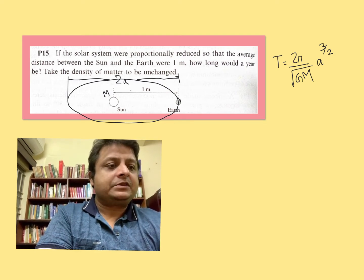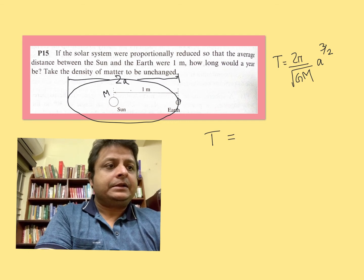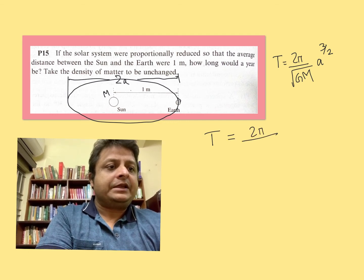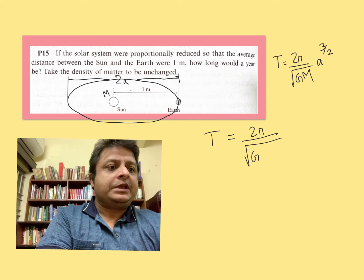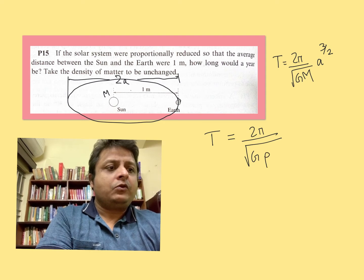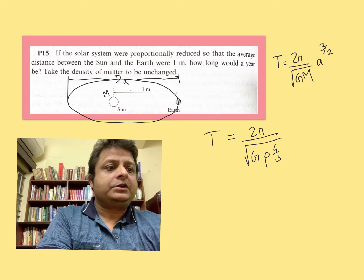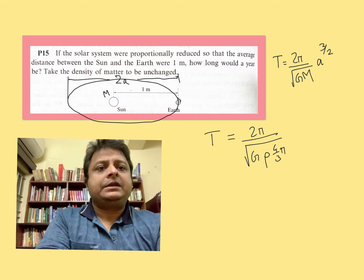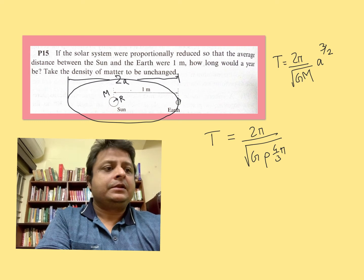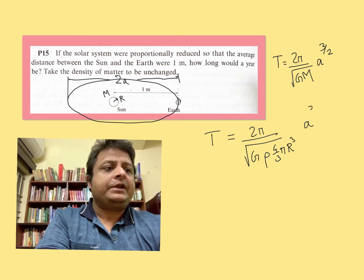So if I write here T = 2π divided by the square root of (G times M), where M equals ρ (density of the Sun) times 4/3 π r³, and here you have a to the power 3/2.